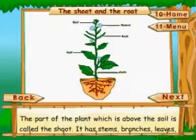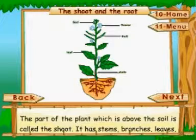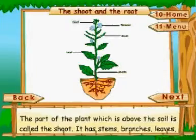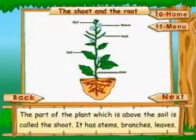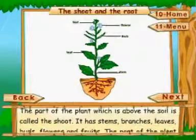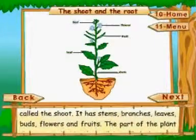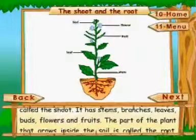The shoot and the root. The part of the plant which is above the soil is called the shoot. It has stems, branches, leaves, buds, flowers and fruits.